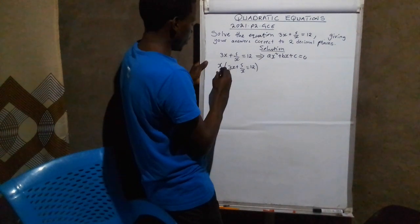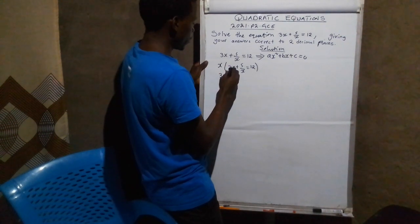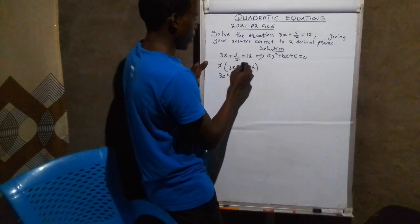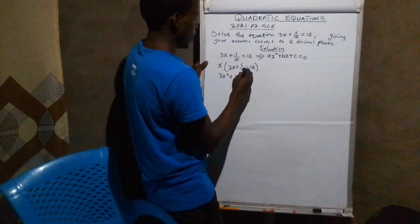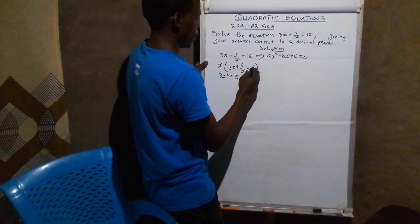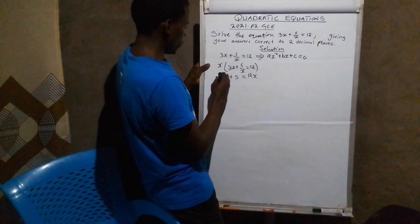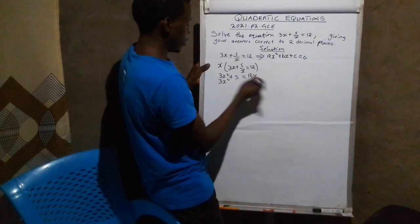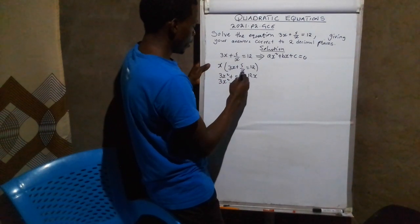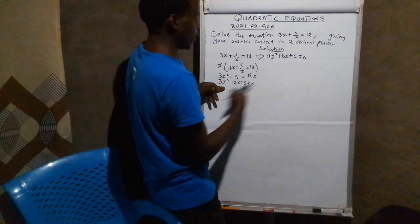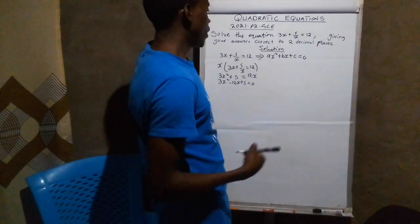Next, this will be x times 3x, which is 3x squared plus x times 5, which is 5x. Divide by x, we are going to remain with 5. It equals to x times 12, which will be 4x. From there, we arrange this one. It will be 3x squared minus 12x plus 5 equals to 0. Now it is matching the standard form of the quadratic equation.